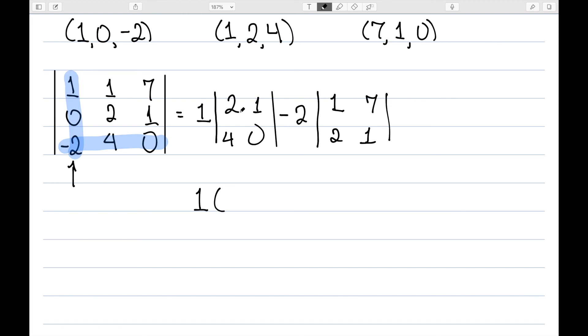I now have one times zero, minus four. Minus two times one, minus 14. Well, this is negative four. This parentheses, one minus 14 is negative 13. Times negative two is positive 26. So my actual volume here will be 22.